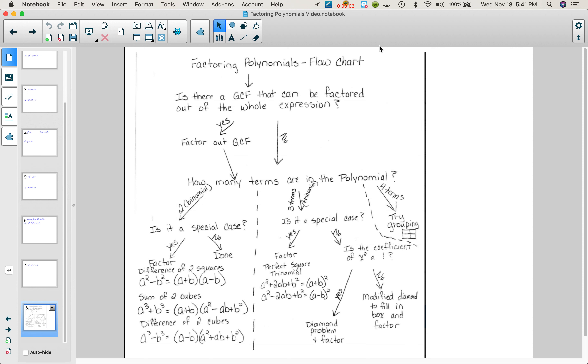This is intended to be a very quick review over the factoring quadratics that we've talked about, factoring polynomials, because we do have some cubics, and how to use this flowchart. First question: is there a GCF that can be factored out of the whole expression? Please make sure you do that first. So I'm going to come back to this as we work through some problems.